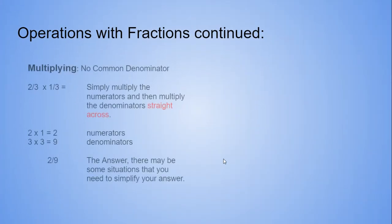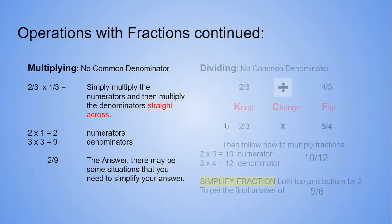For multiplying with fractions, no common denominator is needed. Simply just multiply your numerators and then multiply your denominators straight across. So 2 times 1 is 2, 3 times 3 is 9. And your answer is 2 ninths.